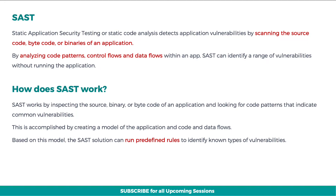SAST works by inspecting the source, binary, or byte code of an application and looking for code patterns that indicate common vulnerabilities. This is accomplished by creating a model of the application and code and data flows. Based on this model, the SAST solution can run predefined rules to identify known types of vulnerabilities.